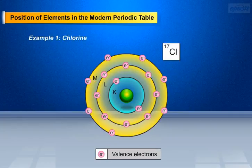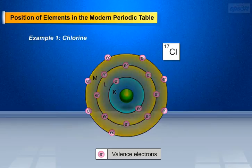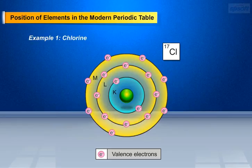The Chlorine atom has 17 electrons in total. Orbit K contains 2 electrons. Orbit L contains 8 electrons. Orbit M contains 7 electrons, i.e., valence electrons. Elements having 7 valence electrons are placed in group 17 of the periodic table.